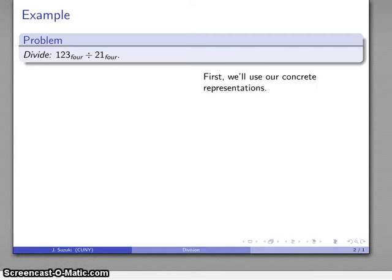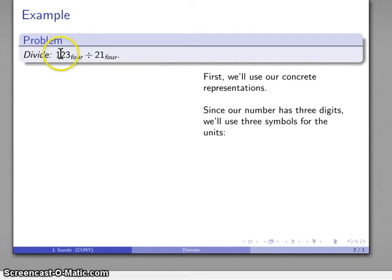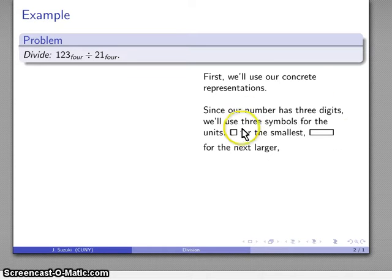So let's go ahead and view this quotatively. I'll draw our concrete representations. Our dividend has three digits, 123 base 4, so we'll need to use three different symbols for the units. It really doesn't matter what symbols I use, but we'll go ahead and use our standard small square for the smallest unit. A bunch of these small squares join together to form a single thing for our next larger unit, and we're going to take several of these and join them together to form our larger unit.